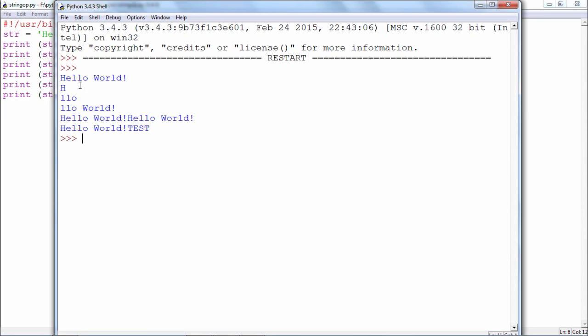We find that this is the character at the 0th index. This is a substring from 2 to 5. This is the substring from 2 onwards. This is the result of the repetition and this is the result of the concatenation operator.